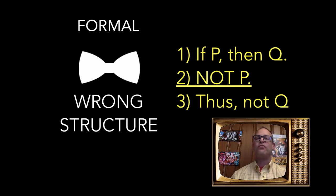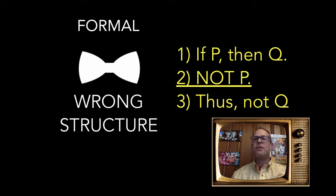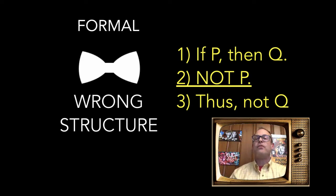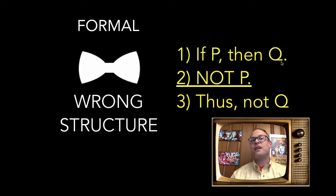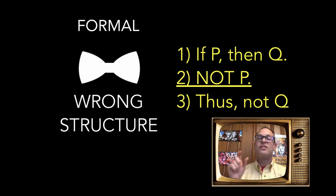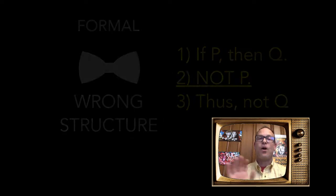Here's an example of a formal fallacy where the structure is wrong: 'If P then Q, not P, thus not Q.' P is any statement and Q is any other statement — a statement being a thing capable of being true or false. It doesn't matter what statement you put in there. Because the thing is built wrong, it will always be a bad argument.